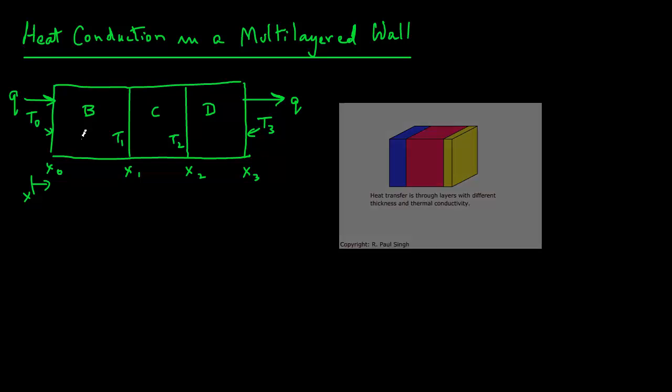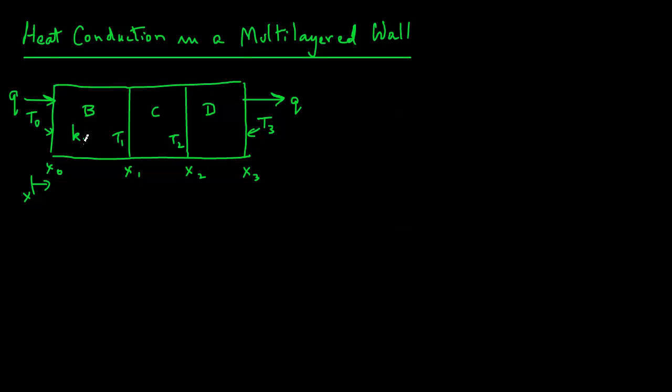And also the thermal conductivity values for each layer are different. So we have KB, KC, and KD. So we will use the thermal resistance concept to determine the rate of heat transfer through this wall, and so we will draw the thermal resistance circuit.